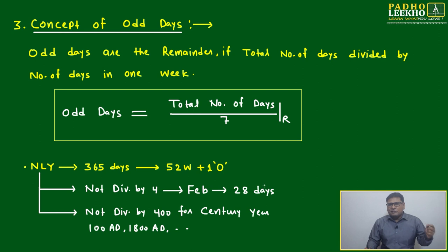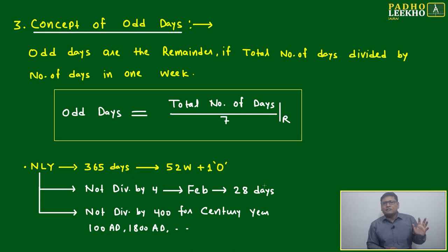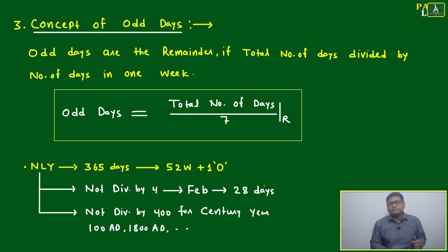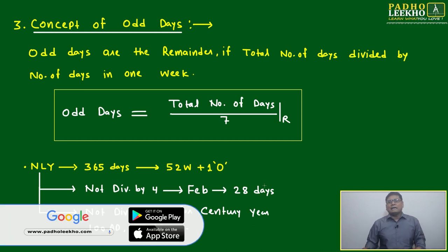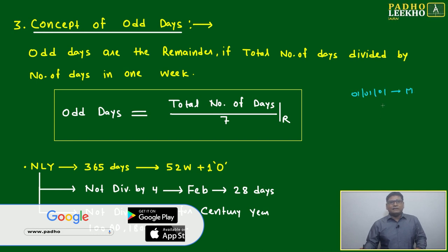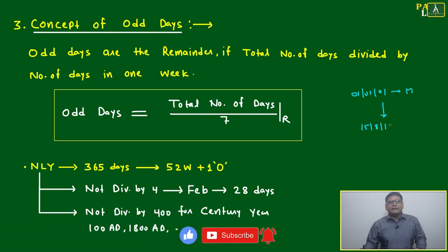For example, take the famous date: August 15, 1947, when India got freedom — which day was it? Don't use a phone or Google calendar; that is not allowed in the exam. You have to use your brain. If January 1st, 1 AD was a Monday, how do we calculate what day August 15, 1947 falls on?